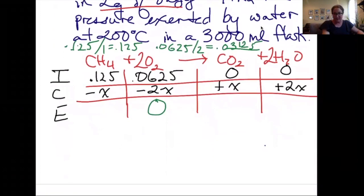Now that I know which one's limiting, I can find x. 0.0625 minus 2x equals 0.